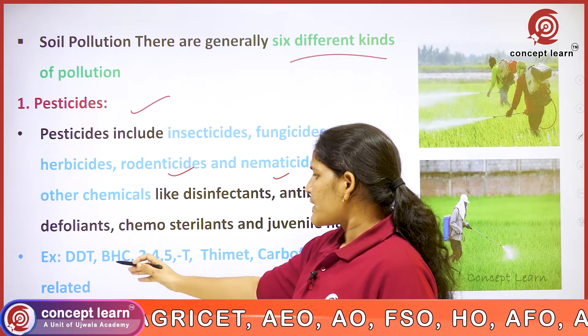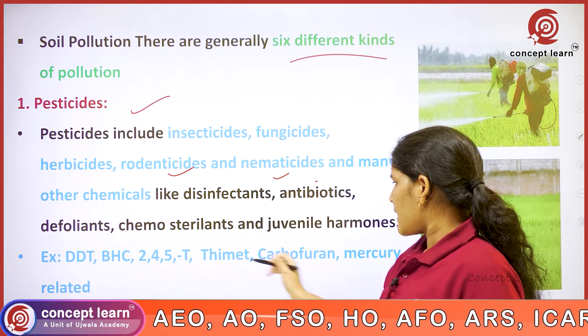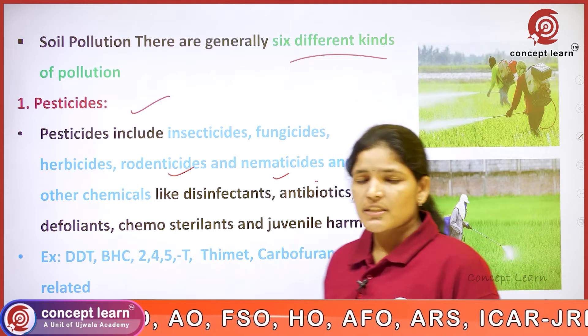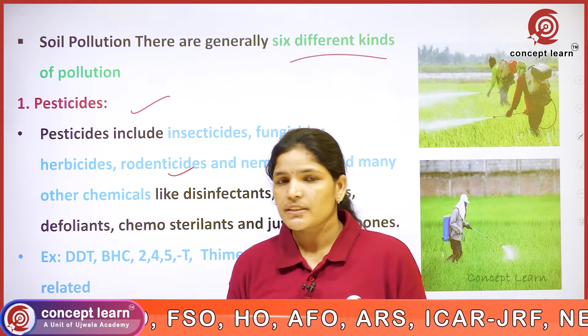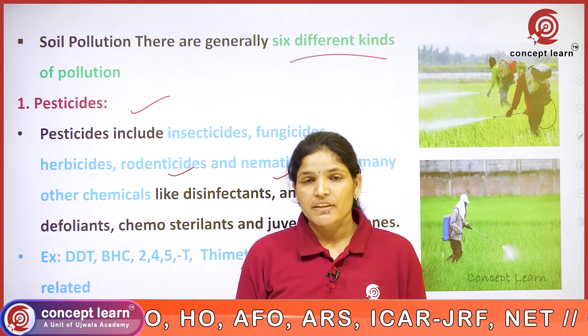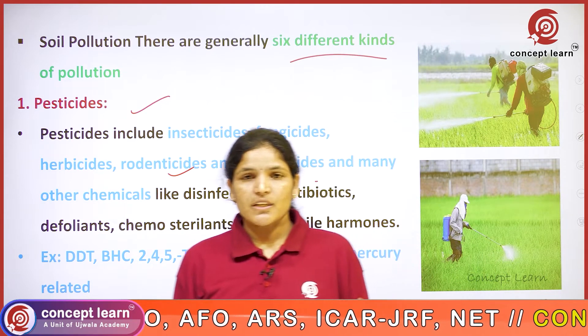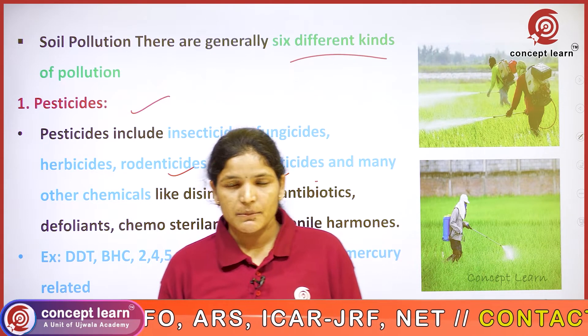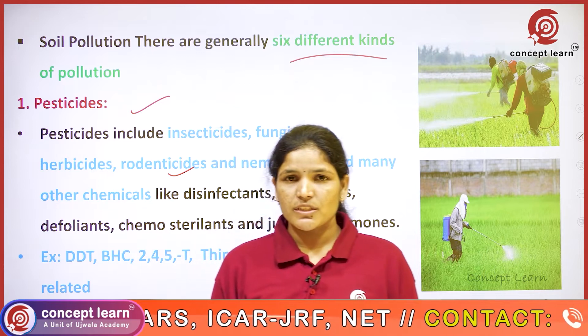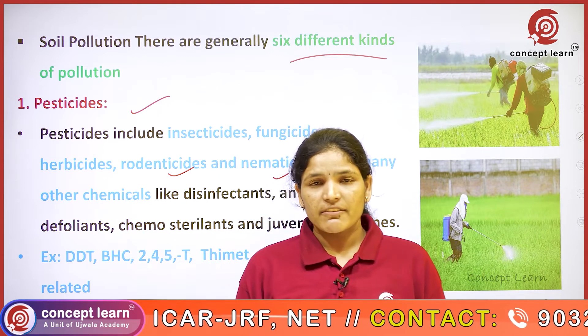Examples of pesticides include DDT, BHC, 2,4-D, thiamate, and carbofuran. These are the examples for the pesticides.